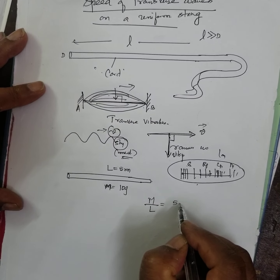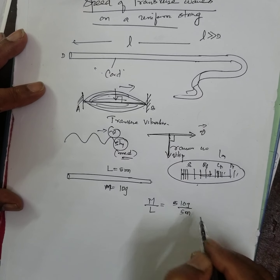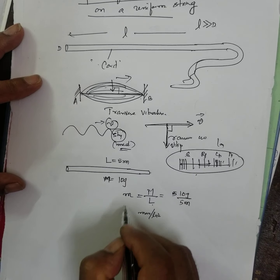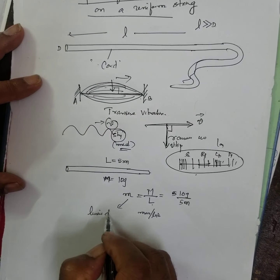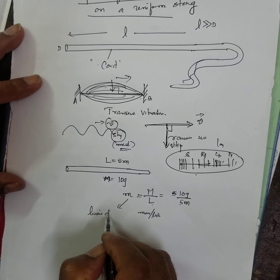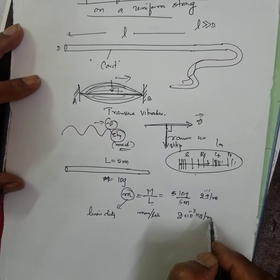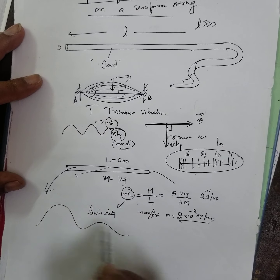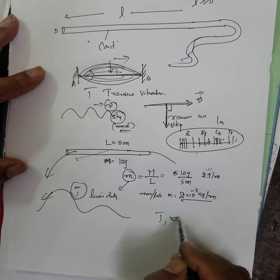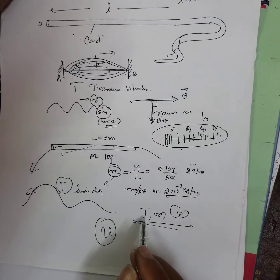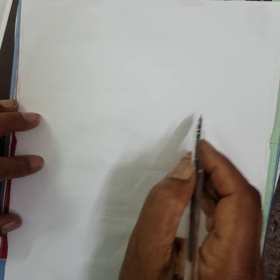But we are discussing a transverse wave. The velocity of the transverse wave in the string depends upon the characteristics of the string. For example, if the mass of the string is 10 grams and the length is 5 meters, then mass per unit length is 10 grams per 5 meters = 2 grams per meter = 2×10⁻³ kg/m. This is called linear density, denoted by M.